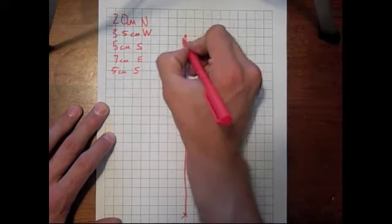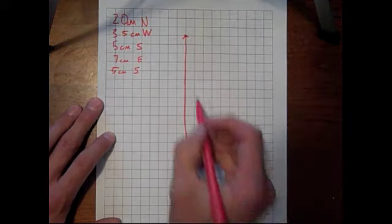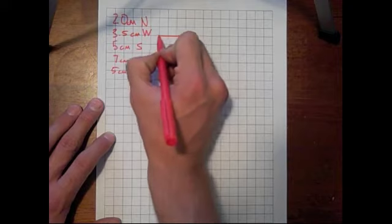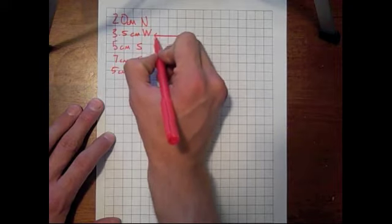So we're going to draw our first vector 20 meters north, and then to put the second one on, we're going to put the tail of that vector at the tip of the very first vector we drew, and we're going to draw 3.5 centimeters to the west.